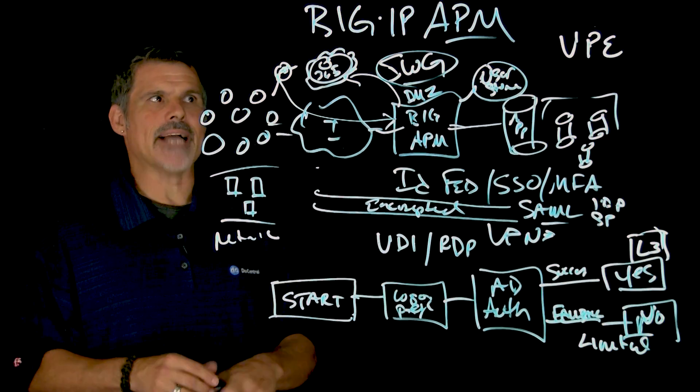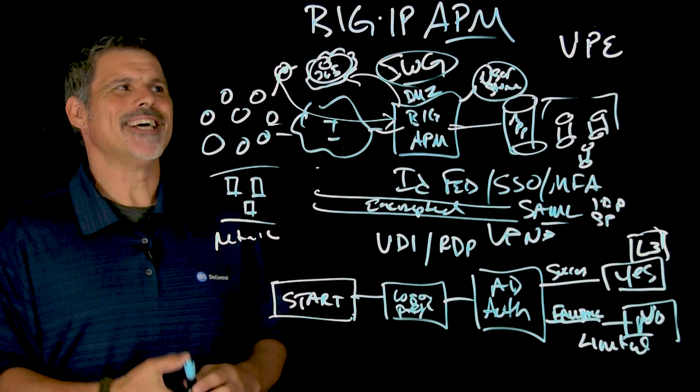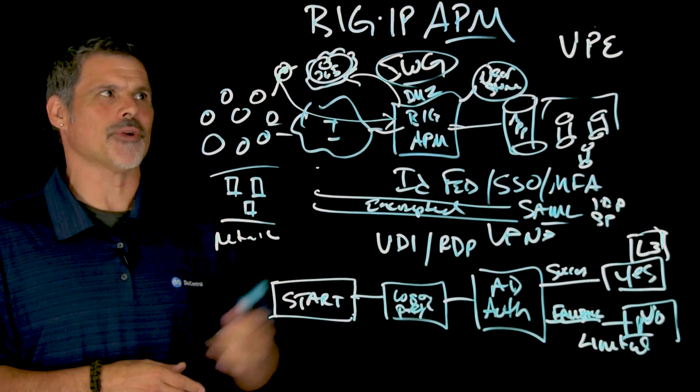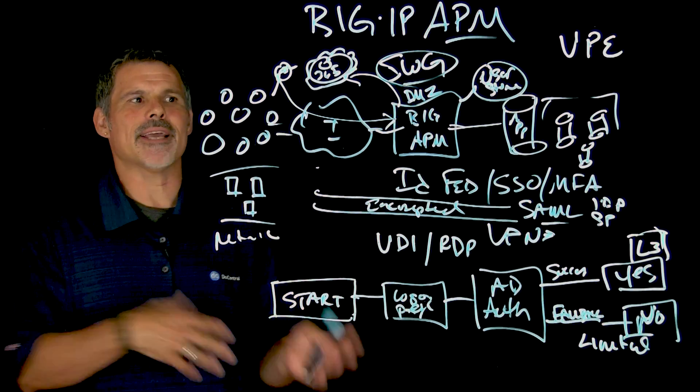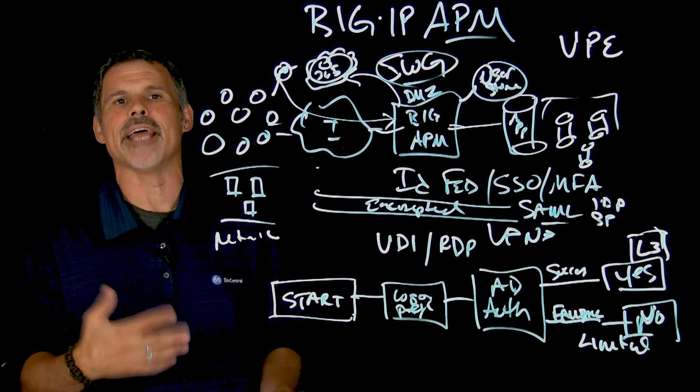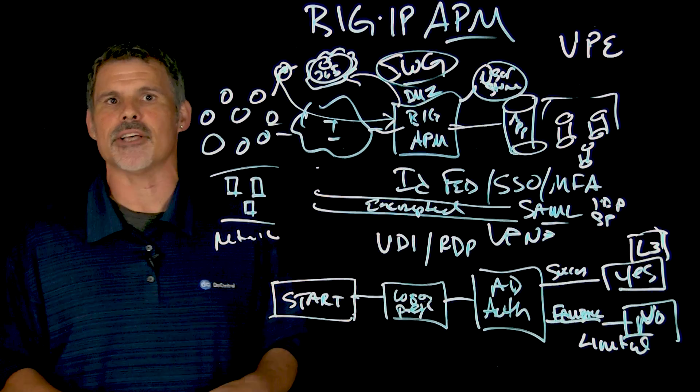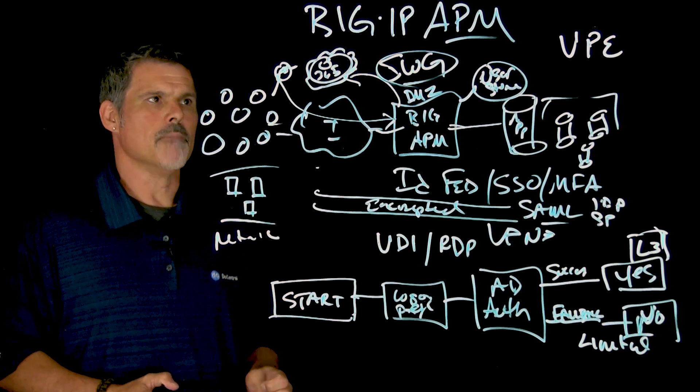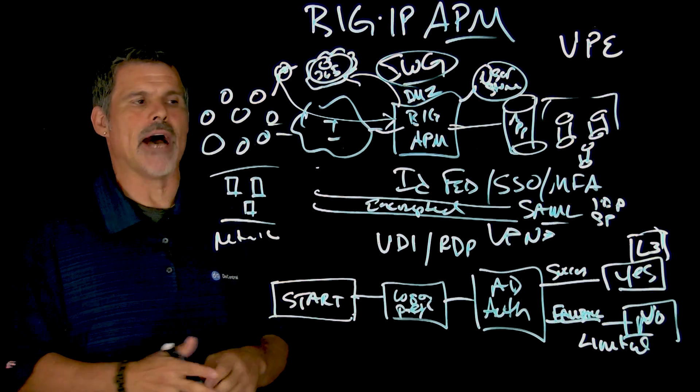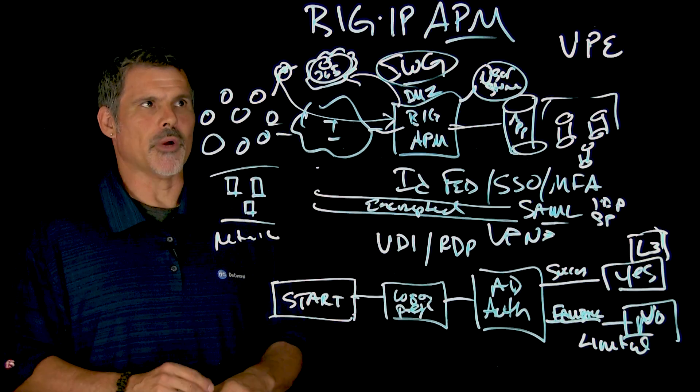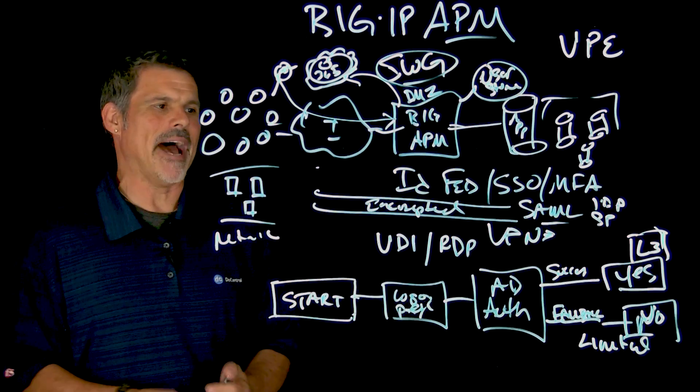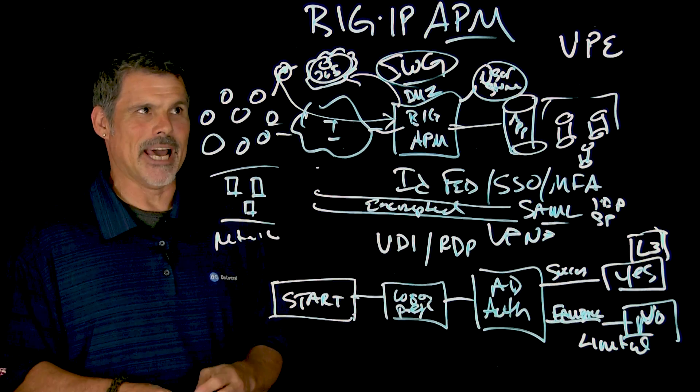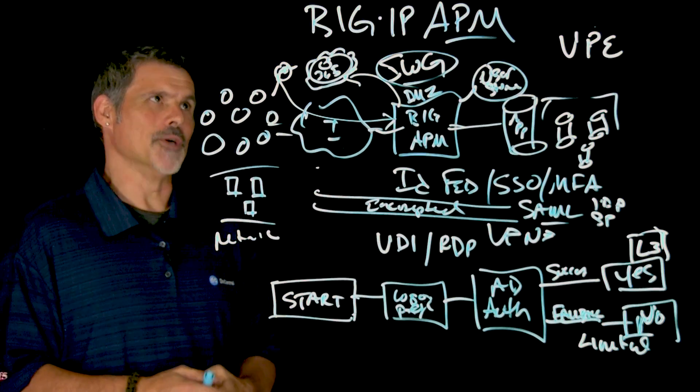So Big IP Access Policy Manager. For your old schoolers, just a little bit of trivia and history. APM, Access Policy Manager, is actually, we kind of developed that from the olden days. You might remember the FirePass SSL VPN back in 2004 and then subsequent years. That APM kind of grew out of the FirePass SSL VPN back in the day. Just a little bit of trivia for you.